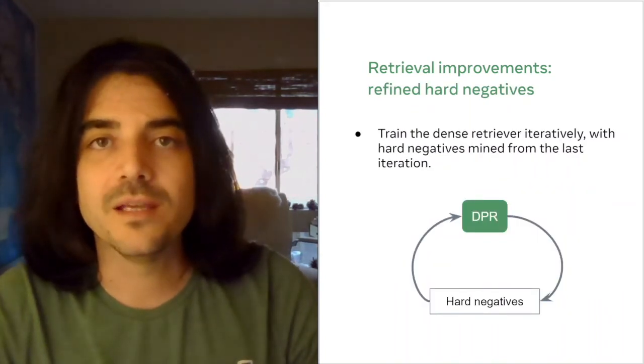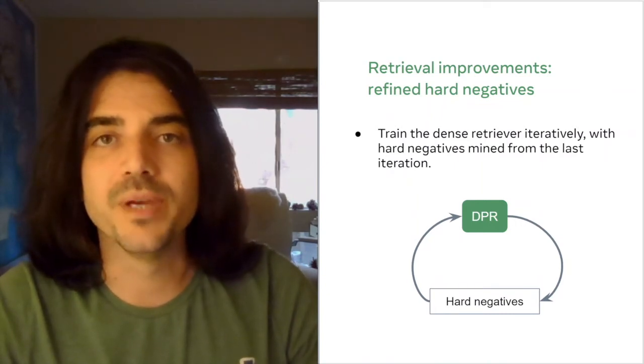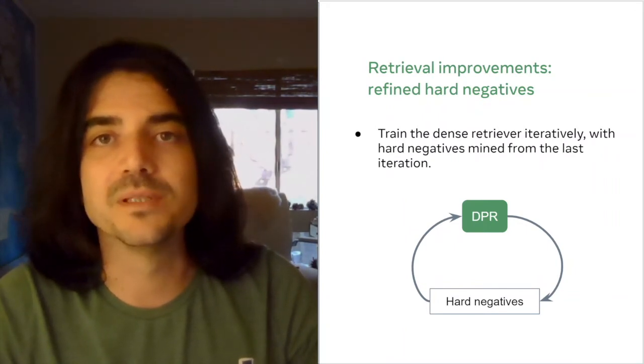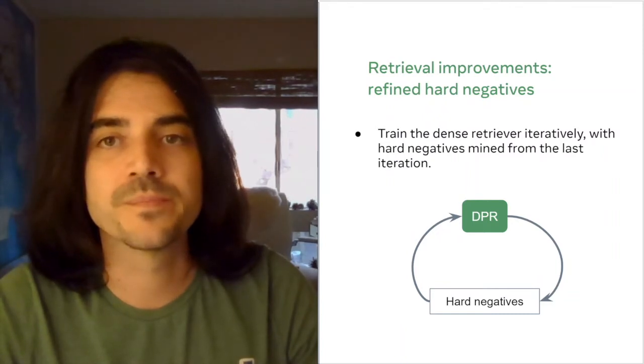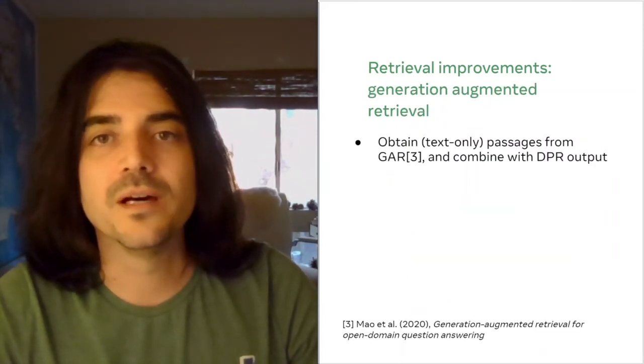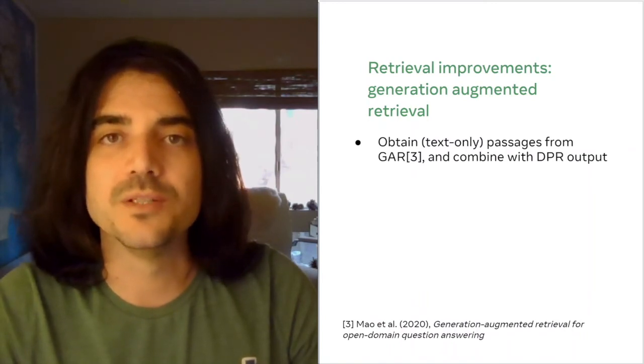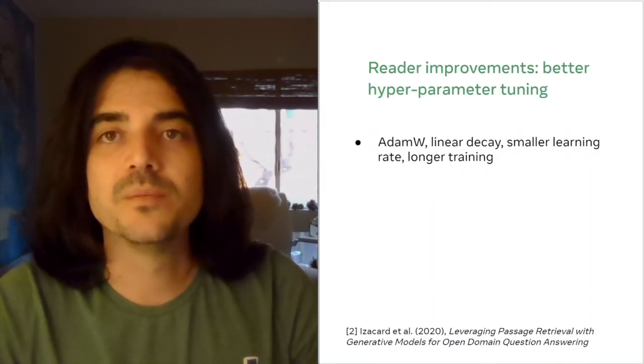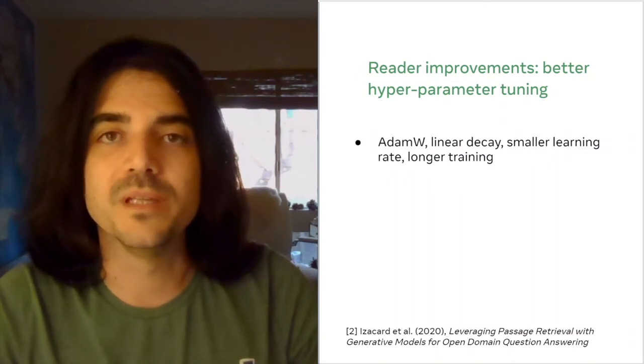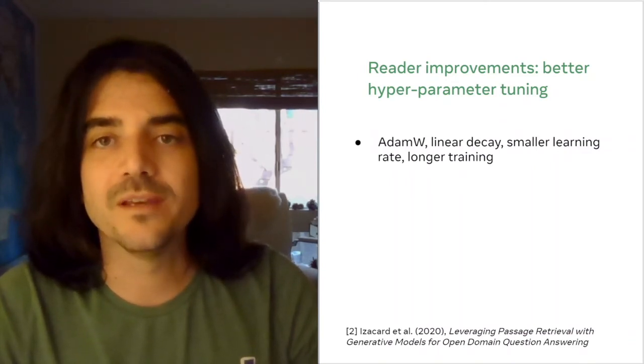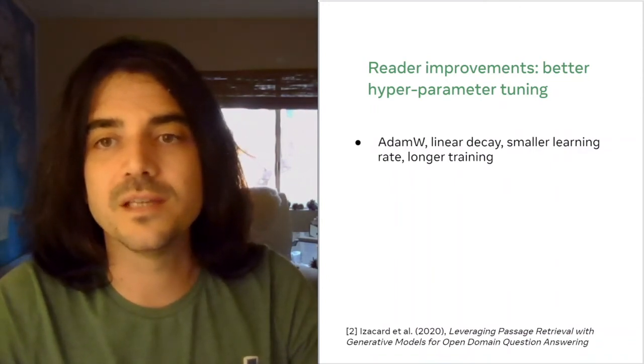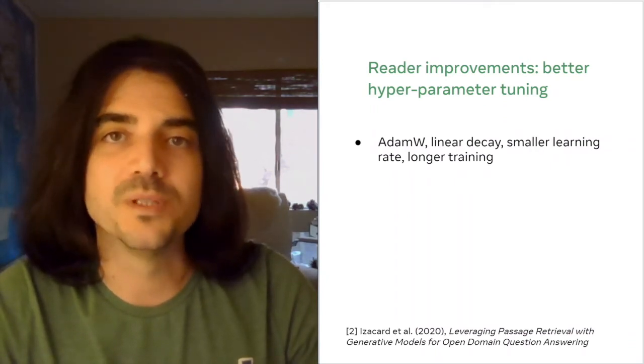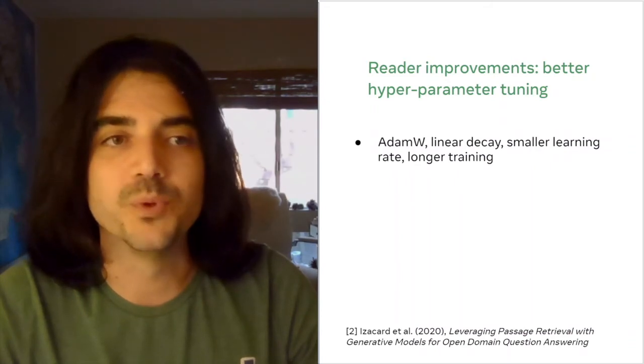For dense retrieval training, we improve upon the baseline using iterative training. At each step, we mine better, harder, negative examples using the previous best model. Finally, we combine our retrieval results with those from generative augmented retrieval. We also make some improvements to the reader model with better hyperparameter tuning. We use a different optimizer, a linear decay schedule, smaller learning rate, and train for a longer time. And these minor improvements actually result in a substantial improvement in the final metrics.